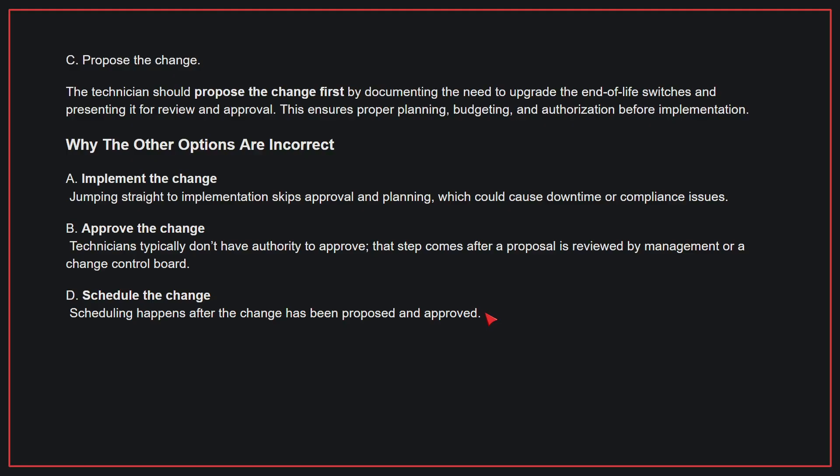Why the other options are incorrect: A, implement the change — jumping straight to implementation skips approval and planning, which could cause downtime or compliance issues. B, approve the change — technicians typically don't have authority to approve; that step comes after a proposal is reviewed by management or a change control board. D, schedule the change — scheduling happens after the change has been proposed and approved. Therefore, the correct answer is C.